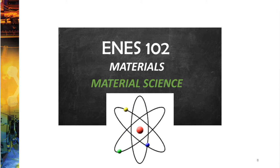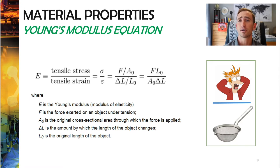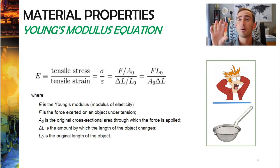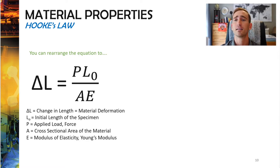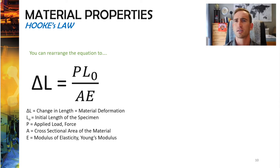Now we'll do a quick review of the material we covered in the last lecture and apply it to several example problems. We talked about Young's modulus — stress over strain. You can rearrange the equation to get that the change in length equals FL over EA, or 'FLEE.' This tells you that knowing Young's modulus, the loads a material is subjected to, and the cross-sectional area, you can figure out how much the material will stretch or compress when loads are applied.